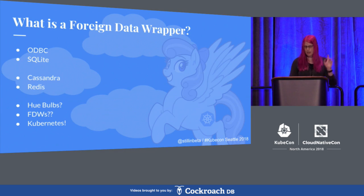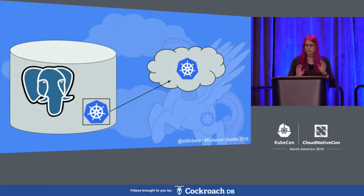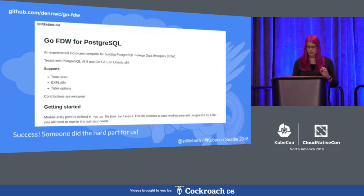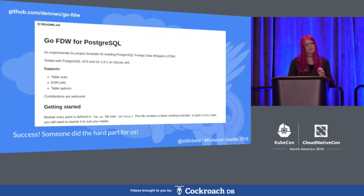And now I'm going to add Kubernetes to the mix. Here's my very advanced technical diagram of how this is going to work. In essence, we'll put a Kubernetes client inside a database and have it talk to the Kubernetes API server. I'm a Kubernetes contributor, so unfortunately I'm mostly familiar with Go. Postgres wrappers are written in C, but thankfully somebody did the hard work of bridging the gap for me already — shout out to DENWC on GitHub.